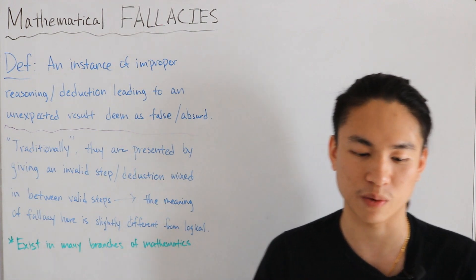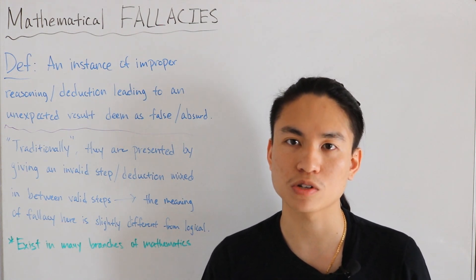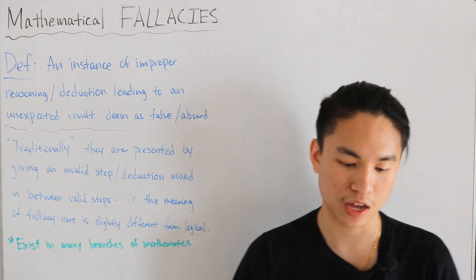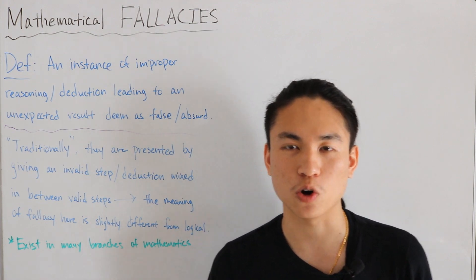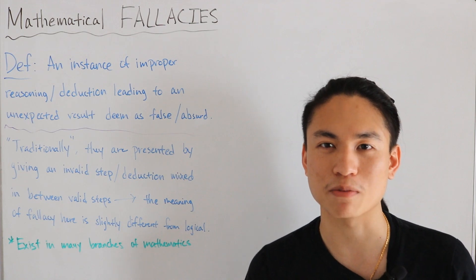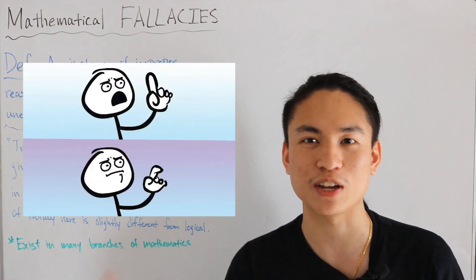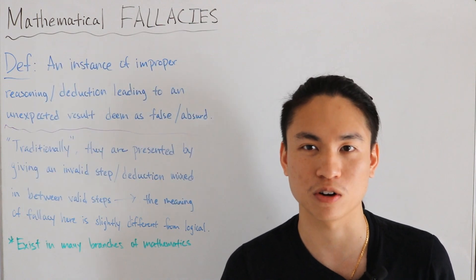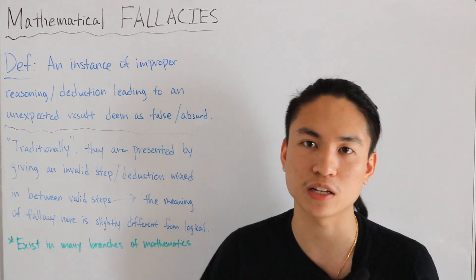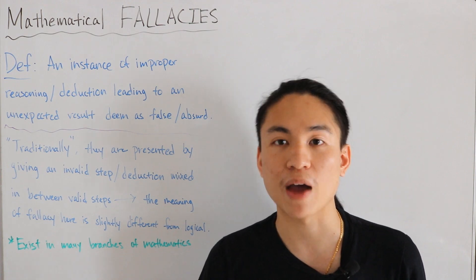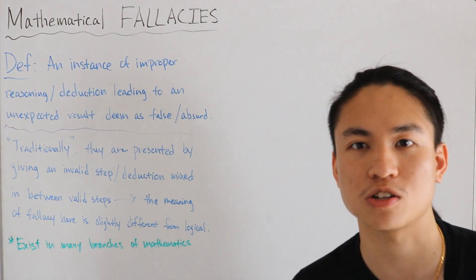The first category we'll look at has a nickname: howlers. Howlers are mathematically correct results derived through incorrect lines of reasoning. You could think of it like the meme where someone puts their finger up to say something but then puts it back down — the answer is right, but the method is wrong. We'll cover this example first and then move through each type one at a time. Feel free to comment below if you know of any math fallacies I might have missed.